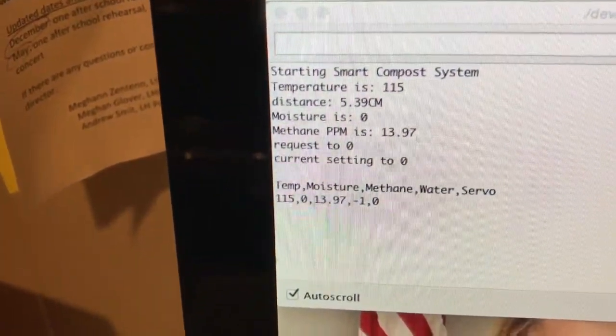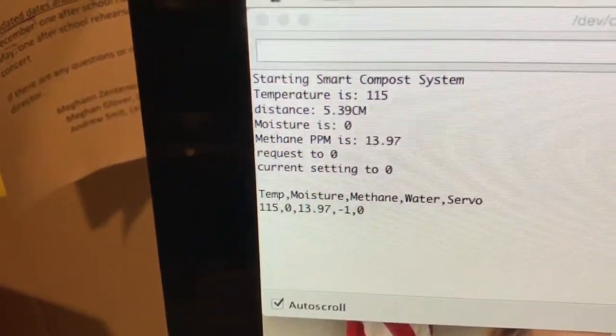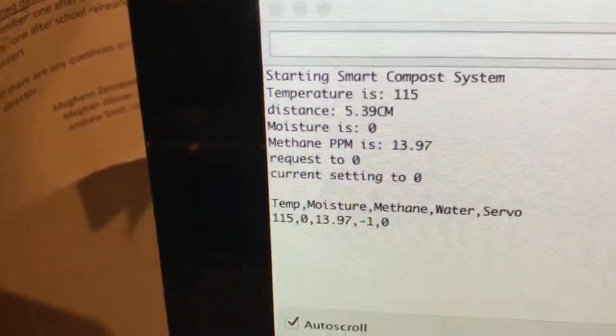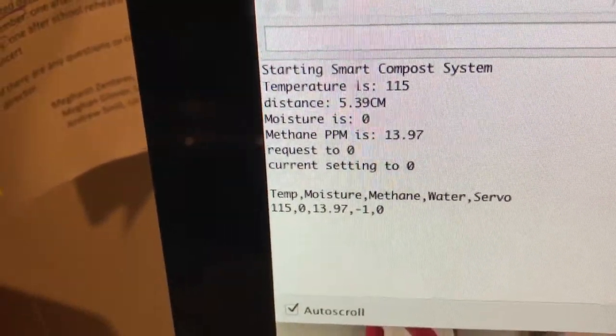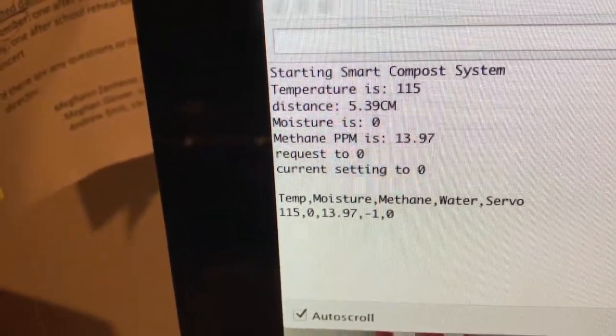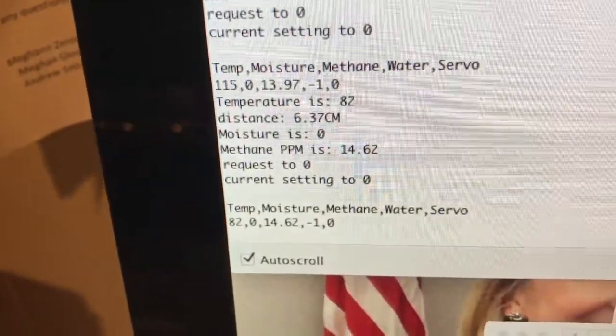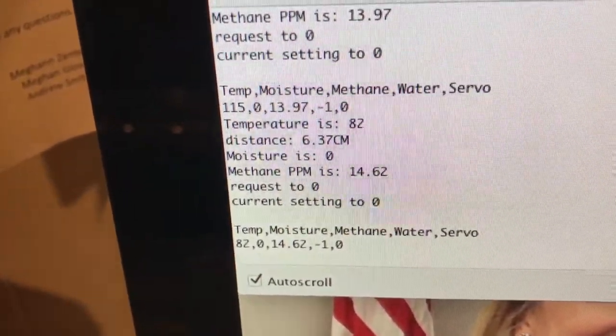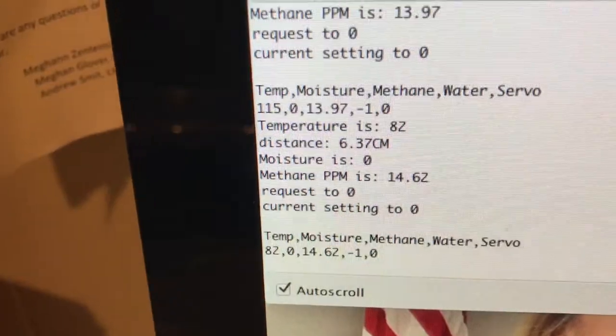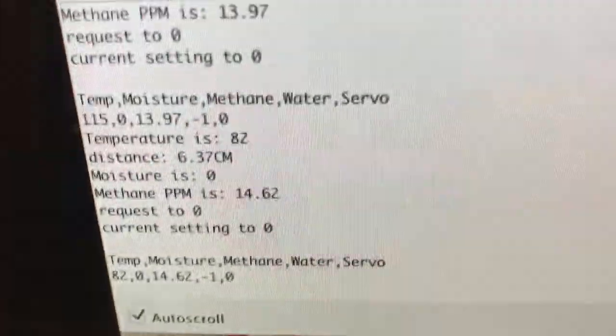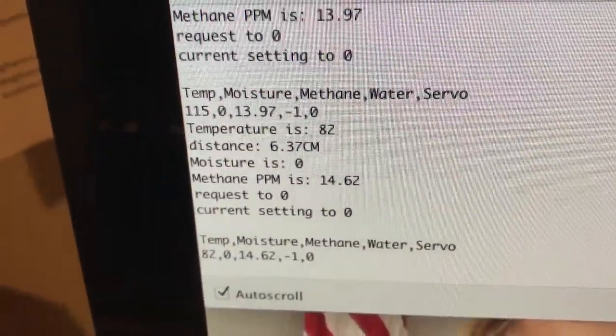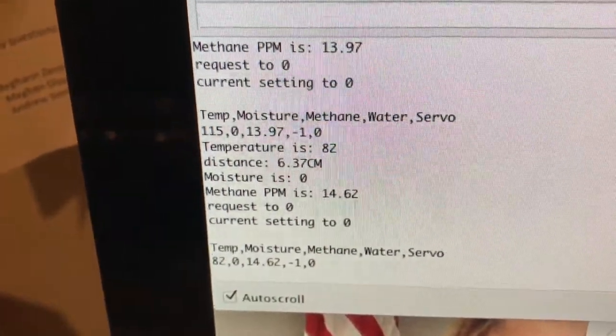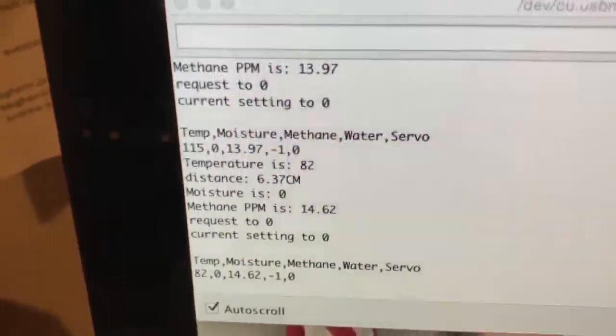So we see our temperature is about 115 degrees. We have no moisture, which just makes sense because we don't have that moisture sensor in anything. Our methane is 13.9 ppm, which is just fine. That negative one means that we need water, which makes sense because we have it showing in an empty cup. And then the servo is marked at zero. That means the servo is closed. The vent is closed.